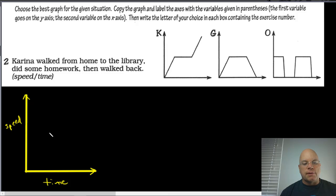She's walking at some certain speed, whatever that speed is, to the library. And then once she gets to the library she stops walking, so the graph should go down to zero. She did some homework at the library, so time's passing and she's not walking, so her speed is zero.